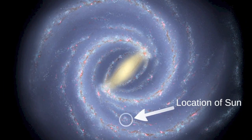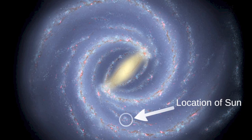By investigating our solar system's distance relative to other objects in the Milky Way, such as globular star clusters, astronomers have determined our position in the galaxy. The Sun and Solar System are located in one of the Milky Way's spiral arms, roughly 25,000 light years from the central bulge.